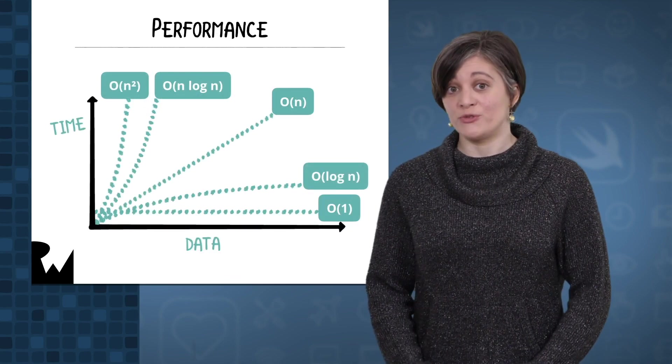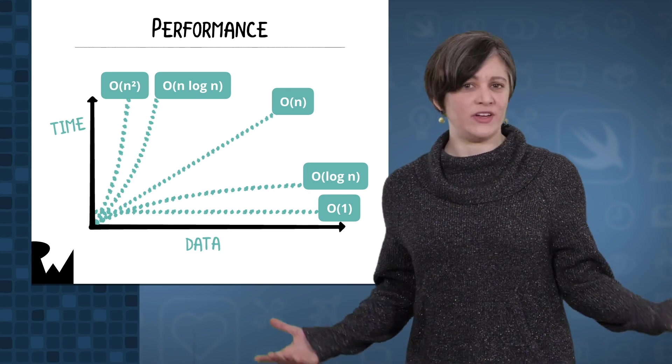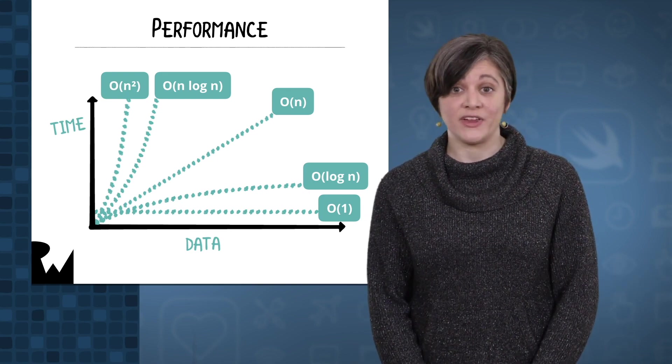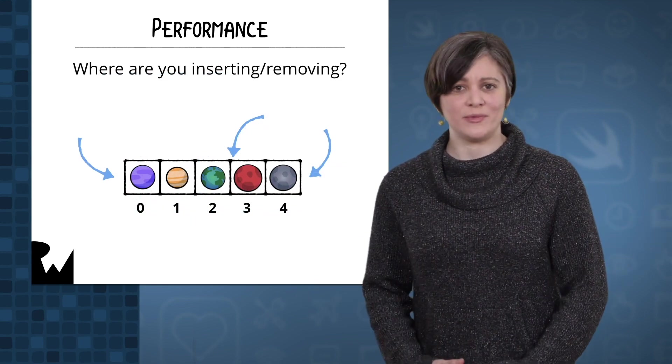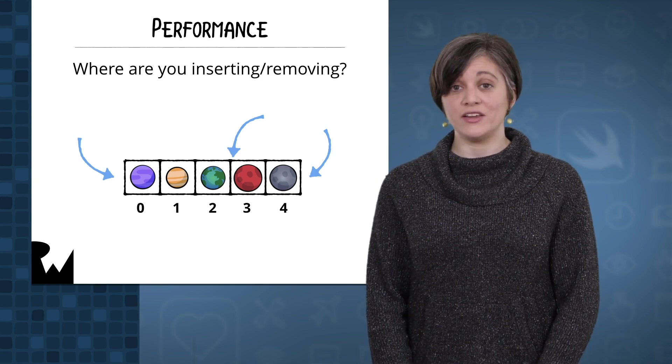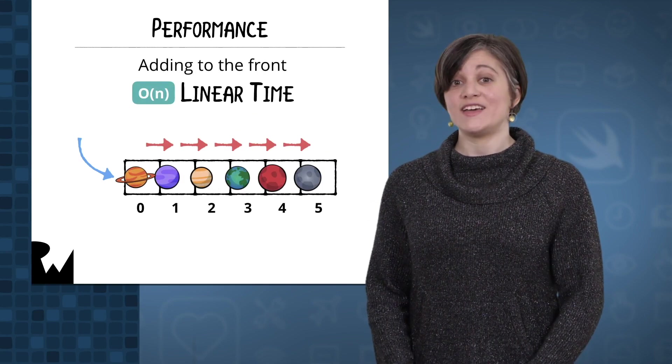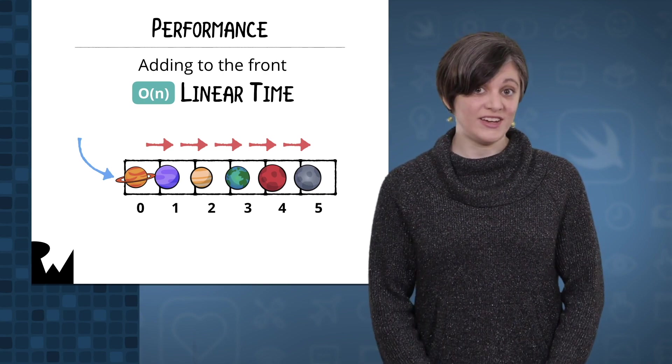There are other aspects of performance you should consider, like how does the data structure handle adding or removing data? With arrays, there are two factors at play. First, where are you trying to insert or remove an element? Remember arrays employ that zero-based index system to order their elements. So if you try to add something at the front of the array, every other element in the array needs to shift over one index.